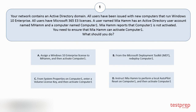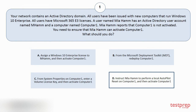Your options are: A. Assign a Windows 10 Enterprise license to Mham, and then activate Computer1. B. From the Microsoft Deployment Toolkit, redeploy Computer1. C. From System Properties on Computer1, enter a volume license key, and then activate Computer1. D. Instruct Mia Ham to perform a local autopilot reset on Computer1, and then activate Computer1. The correct answer is option D.